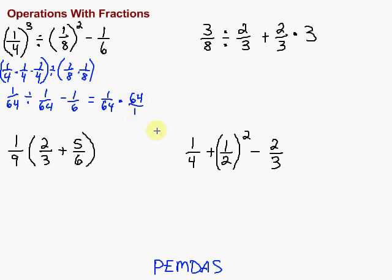And then we got the minus one-sixth hanging along with us. Multiply that, we get sixty-four. Remember, multiplying fractions, we just multiply straight across on the top and the bottom. So we have one times sixty-four is sixty-four. Sixty-four times one is sixty-four. So we have sixty-four over sixty-four, which is just one.